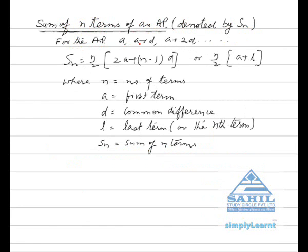Sum of N terms of an AP, denoted by Sn. For the AP A, A+D, A+2D, and so on, Sn is given by N/2 × (2A + (N−1) × D), or N/2 × (A + l). We can use the first or the second formula according to the quantities given. In the first formula we use N, A, and D; in the second formula we use N, A, and l, where l is the last term or the Nth term.